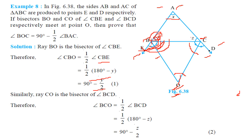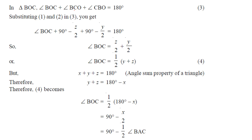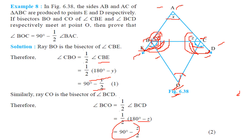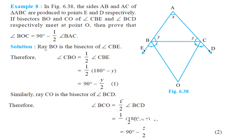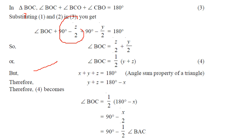Similarly, CO is the bisector of angle BCD. Taking angle ACB as z, angle BCD equals 180 minus z, so angle BCO equals 90 minus z by 2. In triangle BOC, angle BOC plus (90 minus z by 2) plus (90 minus y by 2) equals 180 degrees.